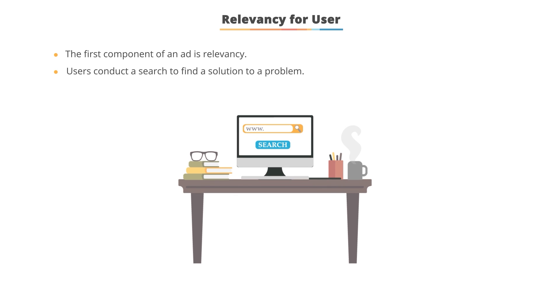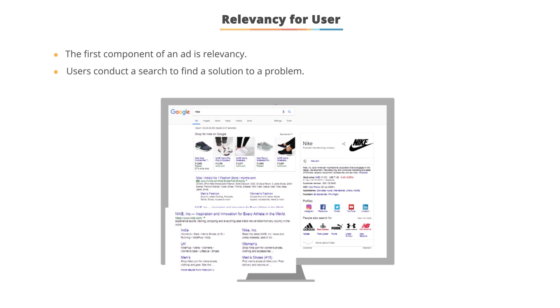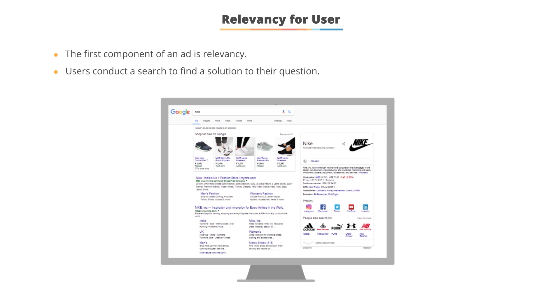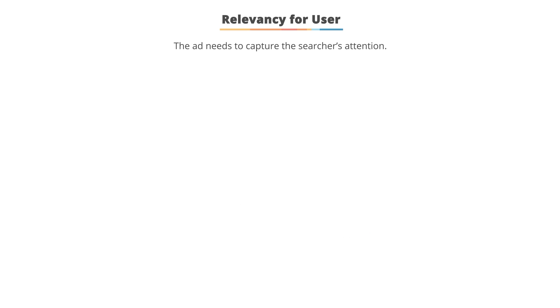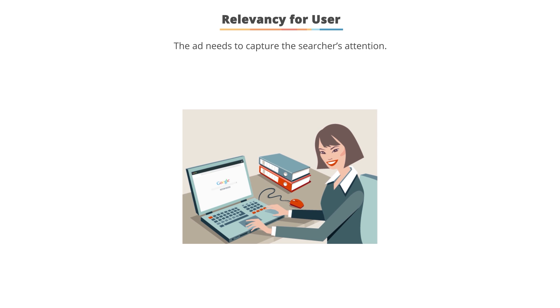The first thing to think about is that you need your ad to be relevant. Search is conducted by users trying to find a solution to a problem or an answer to a question. You want the ad to be relevant to a user when someone does a search, since there are so many options on the page — ads, organic listings, sometimes a knowledge box, images, videos, or other content. You need your ads to stand out and say, 'I can answer your question.' One way to do this is to mimic the user's intent by including keywords in the ad.